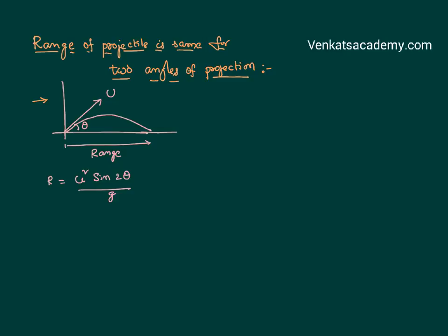From this equation it is very clear that the range of a projectile depends on the initial velocity of projection. Acceleration due to gravity at a given place is constant, and the angle of projection theta. Suppose we have projected with an angle theta — range is nothing but R1 equals u squared sine 2θ divided by g.